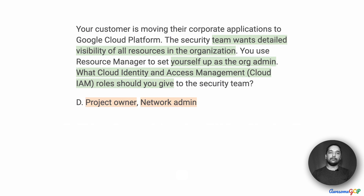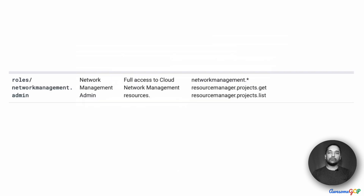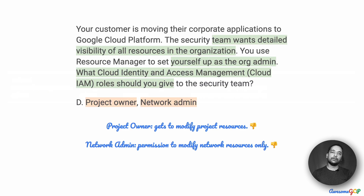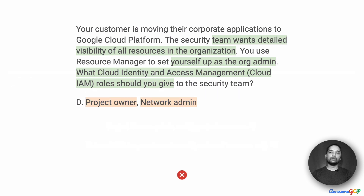Option D suggests that we give project owner and network admin. Project owner, as we saw earlier, is too permissive because they get to edit the resources in the project. The network admin role is not useful for us either — it allows them to change some network configurations, but it does not allow them to view all resources, and it also allows editing of network permissions which should not be granted. So overall, option D also doesn't work for us and is eliminated.